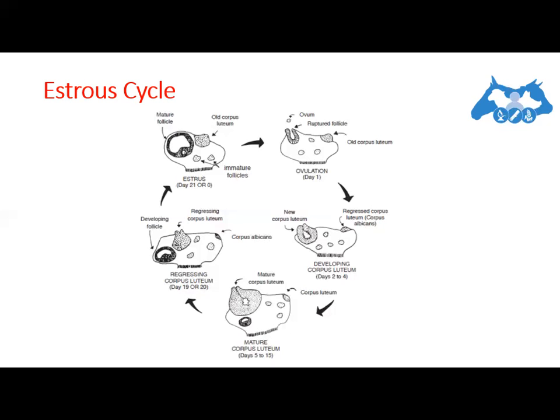Of the several follicles initially recruited, one becomes dominant through a surge in rapid growth and activity. As this Graafian follicle grows it secretes increasing amounts of estrogen, while the smaller follicles start to regress. With the increase in estrogen release by the Graafian follicle and a corresponding decrease in progesterone from the regressing corpus luteum, estrus or heat occurs — the cycle has returned to day zero.